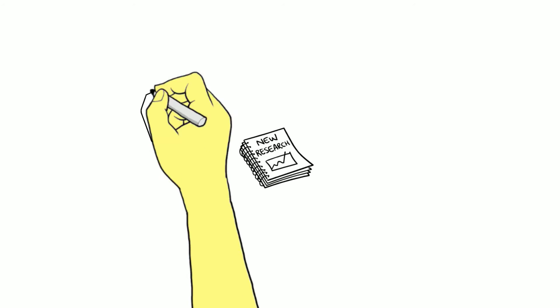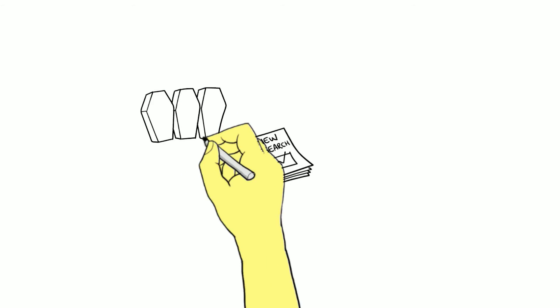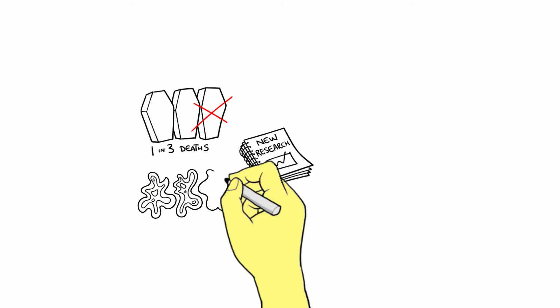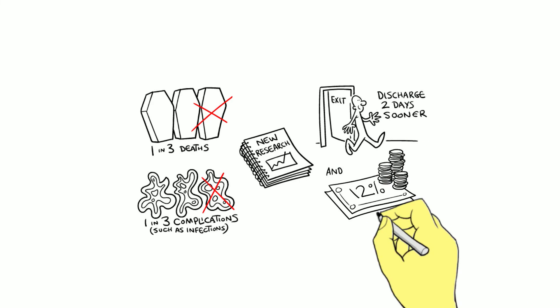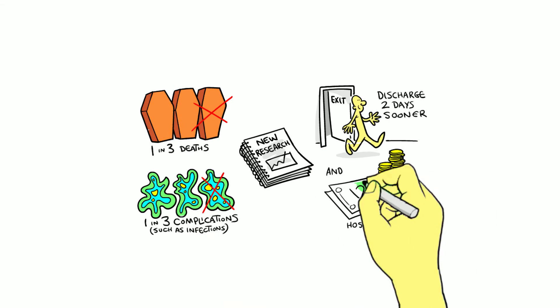Compared to standard care, the use of ONS in hospital saves one in three deaths, one in three complications such as infections, and with discharge from hospital two days sooner, it leads to 12% cheaper hospital care.